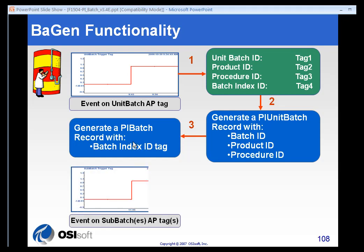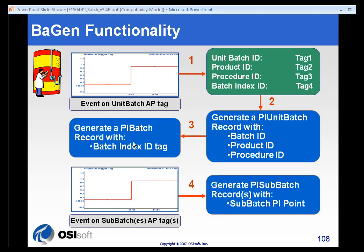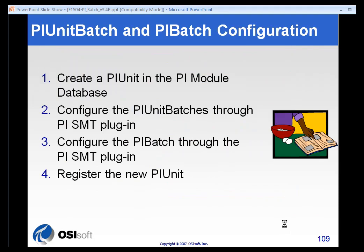Optionally, if there are sub-batches, their active trigger tags are monitored. If those change state, we will generate a sub-batch record using the sub-batch PI point active point, and we'll create start and end times for the sub-batches as well.